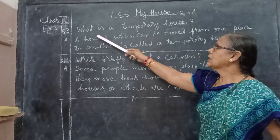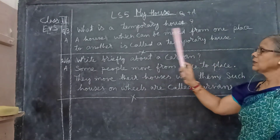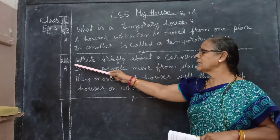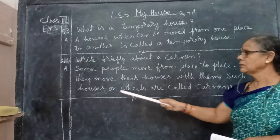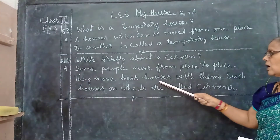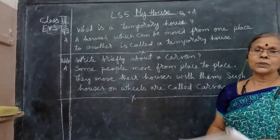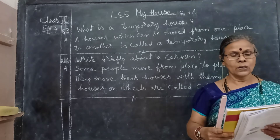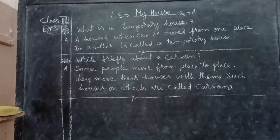Once again I will read these question answers. What is a temporary house? A house which can be moved from one place to another is called a temporary house. Fourth question answer: write briefly about the Karwan. Some people move from place to place. They move their houses with them. Such houses on wheels are called Karwan. Now write the first, second, third, and fourth question answers. In the next class we will write the fifth and sixth question answers. Thank you.